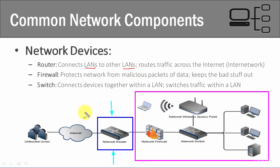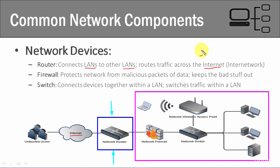In this example we're using the internet, so the router allows us to route traffic from our network across the internet to some other network. Remember, the internet is nothing more than multiple networks connected together — we can call that an internetwork or a wide area network (WAN). A wide area network is nothing more than multiple local area networks connected together. So that's what a router does.